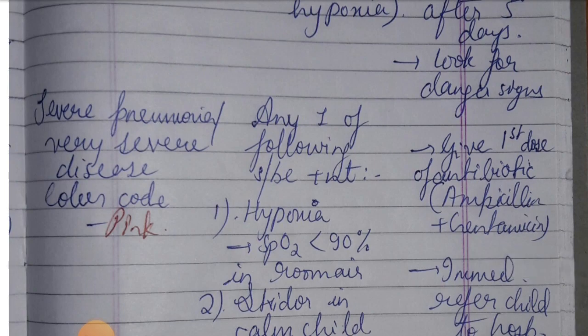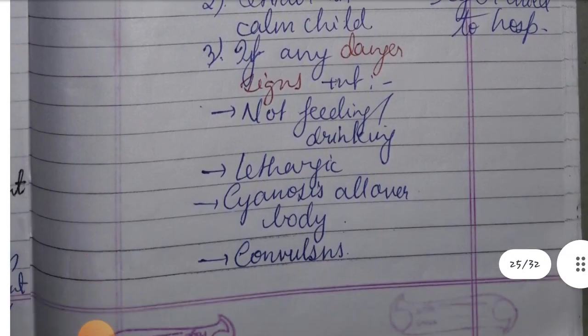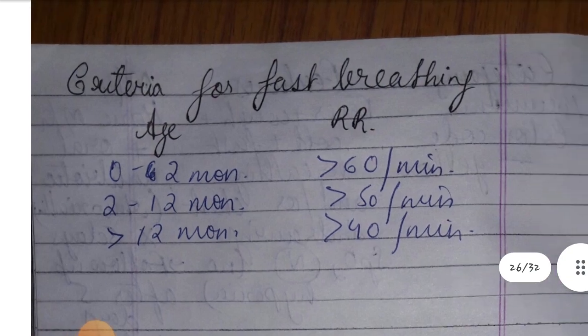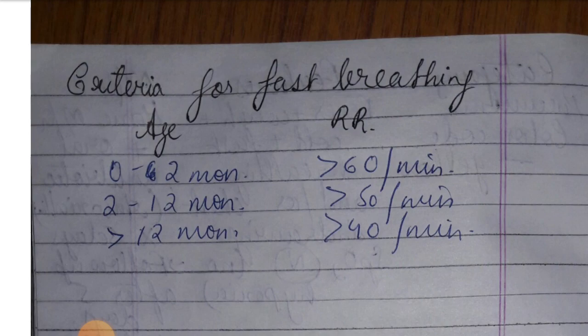The fast breathing criteria for pneumonia are: 0-2 months, greater than 60 breaths per minute; 2-12 months, greater than 50 per minute; and greater than 12 months, greater than 40 per minute. This covers the topic of pneumonia, which will be continued in the next video.